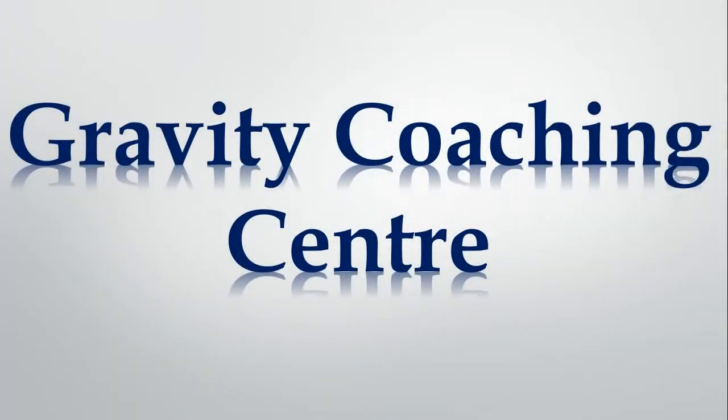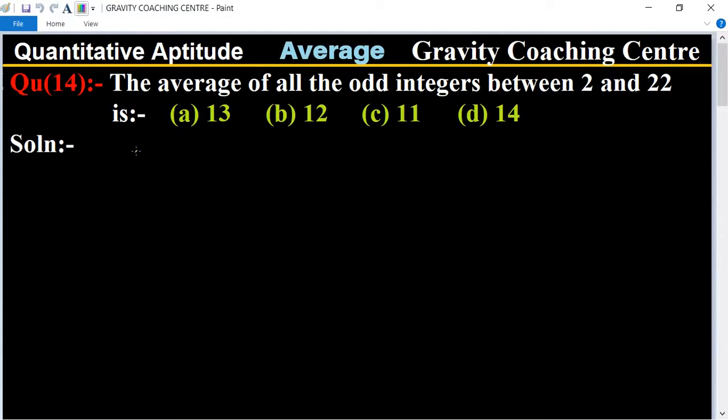Welcome to Gravity Coaching Centre. Quantitative Aptitude, chapter Average, question number 14: The average of all the odd integers between 2 and 22 is which one? In this question, first of all we write all the odd